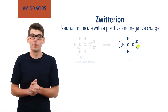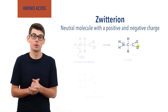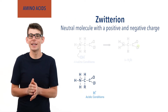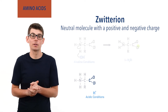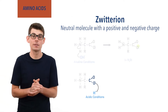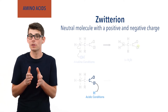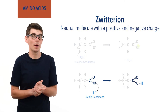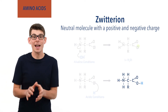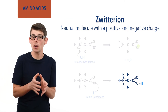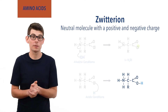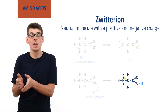If the zwitterion is placed in an acidic solution containing H+ ions, the carboxylate COO- part of the zwitterion will accept an H+ ion and act as a base, reforming a carboxylic acid group, COOH. The molecule is no longer a zwitterion as it has lost that negative charge in its structure and now has an overall charge of 1+ from the NH3+ ammonium group.